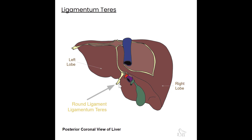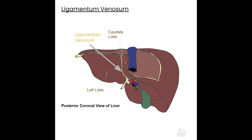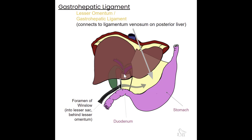The round ligament has potential for revascularization if the liver becomes overloaded with blood, helping shunt blood away. On the posterior side of the liver, the ligamentum venosum sits right along the edge of the caudate lobe. It serves as a landmark for the caudate lobe and its connection to the left lobe as it runs through the left intersegmental fissure. It also connects to the left branch of the portal vein and the gastrohepatic ligament. The ligamentum venosum also used to be part of fetal circulation, known as the ductus venosus.